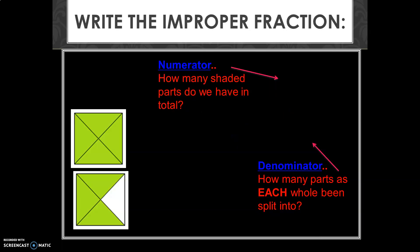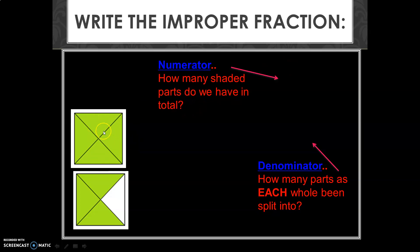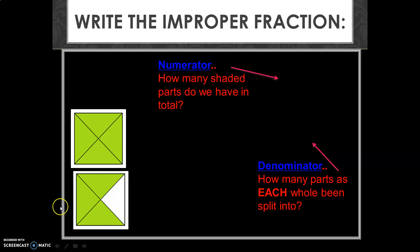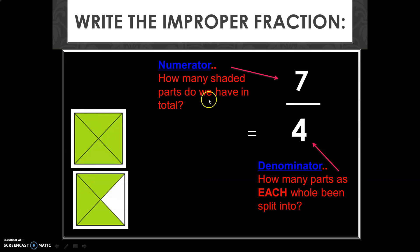Write the improper fraction. You can see squares equally split into four pieces. For your improper fraction, the numerator will be how many shaded parts there are in total: one, two, three, four, five, six, seven — so your numerator will be seven. The denominator is how many parts each whole has been split into: each whole is split into four parts. So your answer is seven upon four.